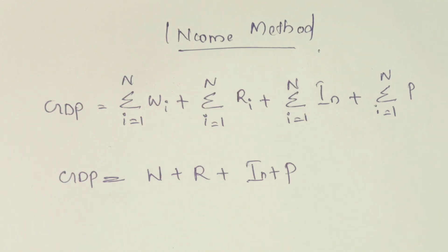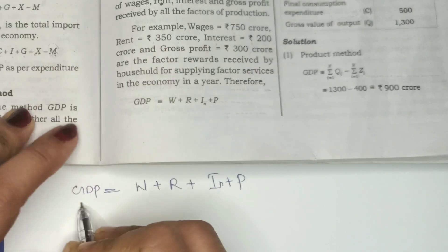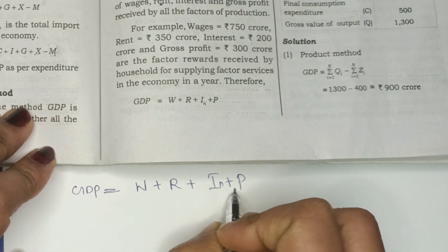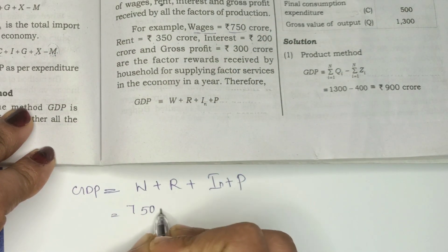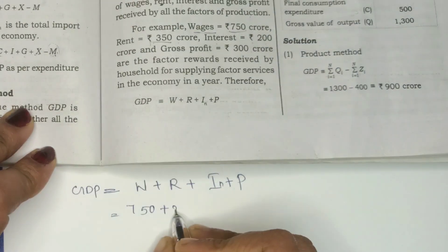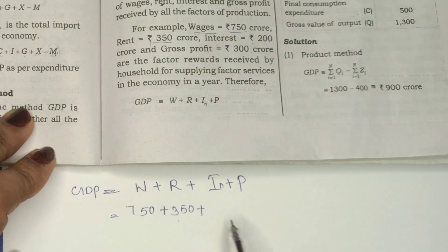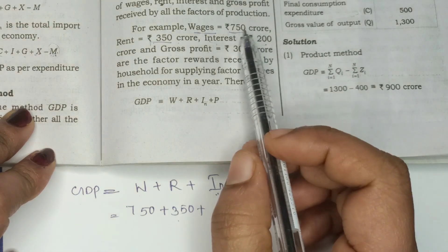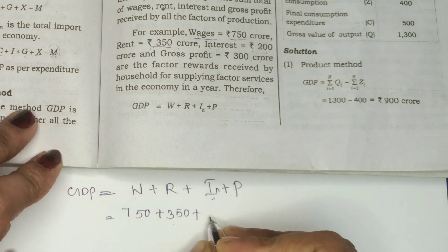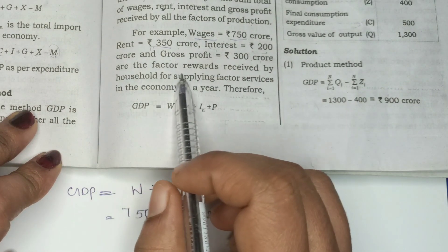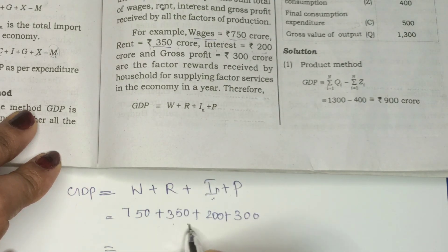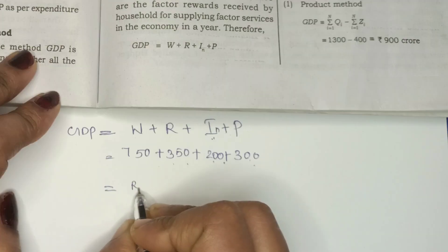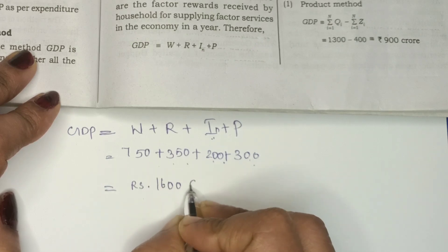So we need to apply these values. GDP = W + R + IN + P. Wages amount is 750, so 750 plus rent 350, plus interest 200, plus gross profit 300. So we need to add 750 plus 350 plus 200 plus 300, which equals Rs. 1,600 crores.